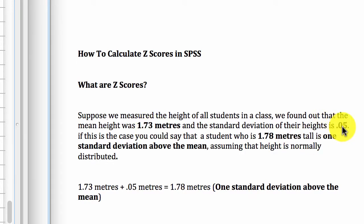So, their height deviates by 0.05 from the mean of 1.73. That's 0.05 meters on average. Now, if it's the case that a student is 1.78 meters tall, this means that the student is 1 standard deviation above the mean. If you look at this simple calculation, it explains why the person is 1 standard deviation above the mean. That's 1.73, which is the mean, plus the standard deviation is 1.78, which is the height of that particular student.